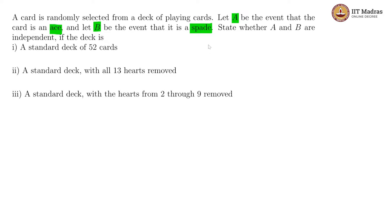In case you are not familiar with the nomenclature of cards, a spade is this particular symbol which looks something like this, filled with black. So the ace of spades would be both A and B being true. Any other card of spades, B would be true but A would not be true. And any other suit's ace, A would be true but not B.